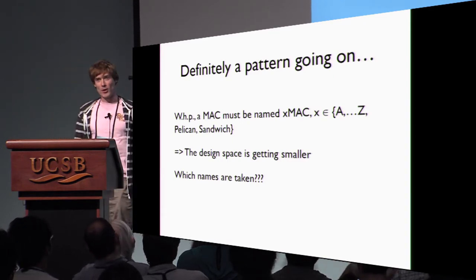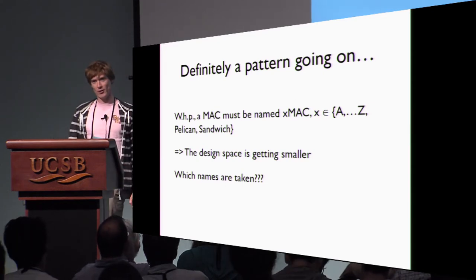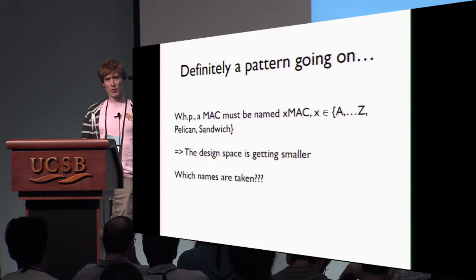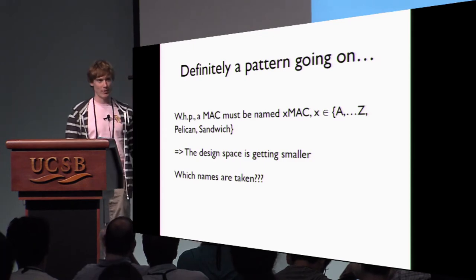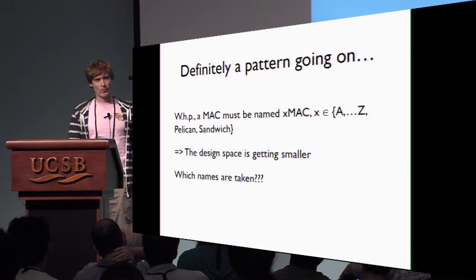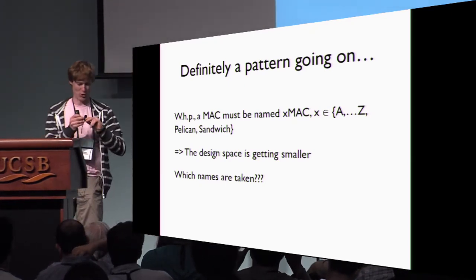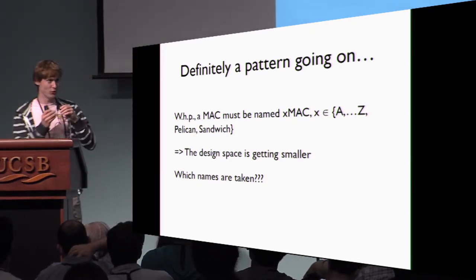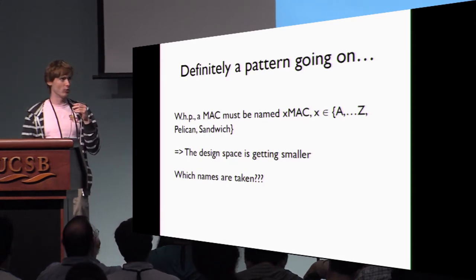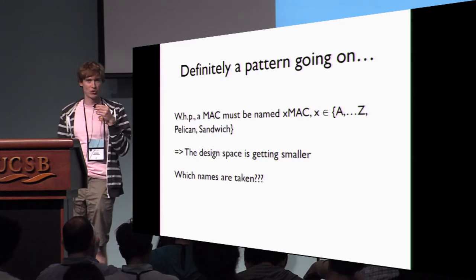But the problem with this is that the naming space is quite small, and this puts a lot of constraint on the design space as well, because if you want to propose a new algorithm, well you need to name it. And now with more and more proposals, only very few names are remaining. So this begs the question: what are the names that are actually still free?